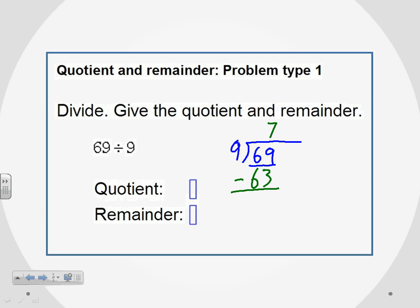We're supposed to subtract that, and we get 69 minus 63 is 6.